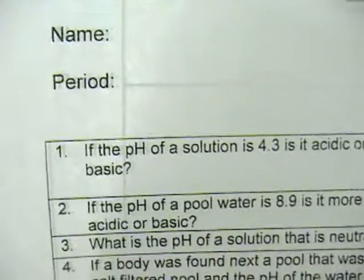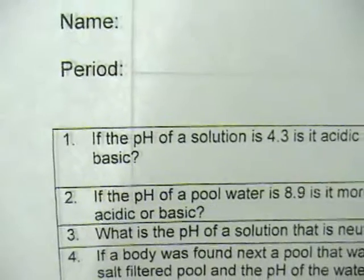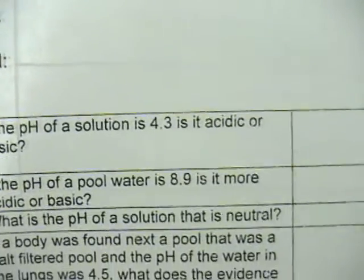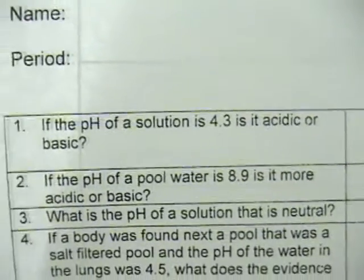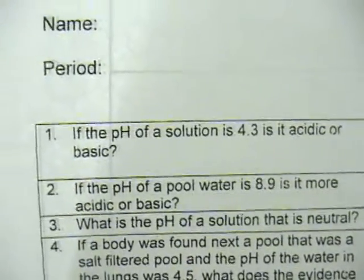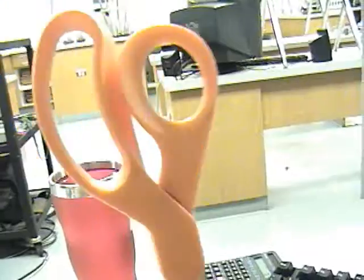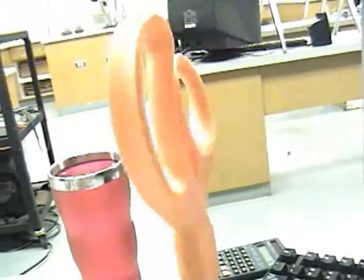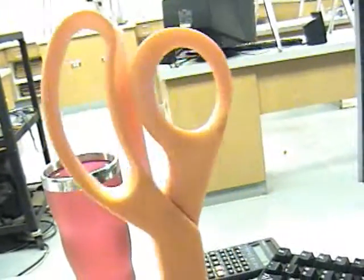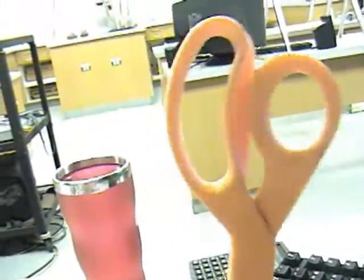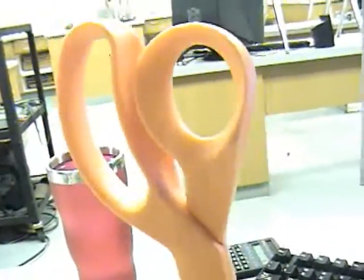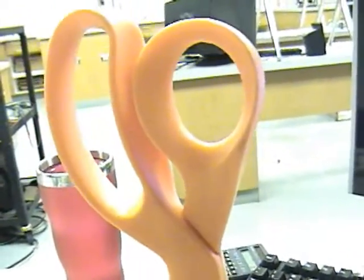The first question on the study guide is: the pH of a solution is 4.3 — is it acidic or basic? Well, that's a pretty easy one because the pH scale is between 0 and 14. The upper half is basic and the lower half is acidic. So this one would be acidic.